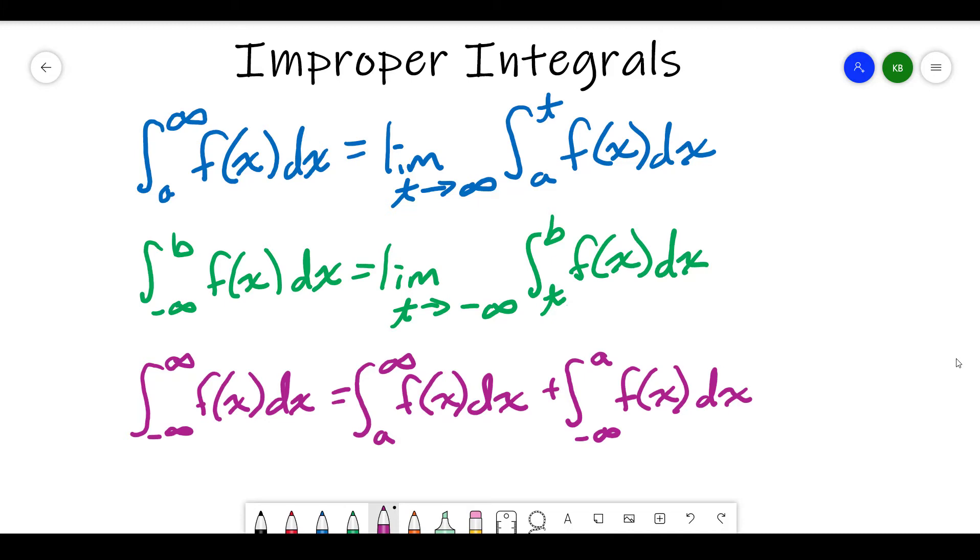And if we have both negative infinity and infinity as bounds of integration, then what we do is we add together. We choose some constant to be a cutoff point. Zero is a very common choice. And we take the integral from zero to infinity and then we add to that the integral from negative infinity to zero. And we'll have to take those limits for each of these.